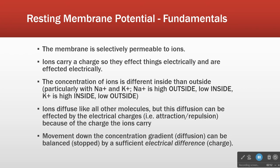And finally, point number five, which really establishes membrane potential: movement down the concentration gradient can be stopped or balanced by electrical differences. If a positive ion is flowing into a negatively charged space, that ion is going to be attracted by both the negativity and the concentration gradient, so we get very brisk flow there.